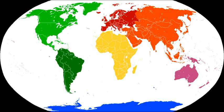The boundaries between the continents of Earth are generally a matter of geographical convention. Several slightly different conventions are in use. The number of continents is most commonly considered seven, but may range as low as four when the Americas and Afro-Eurasia are each considered a single continent. According to the strict definition of a continent, an island cannot be part of any continent, but by convention most major islands are associated with a continent.